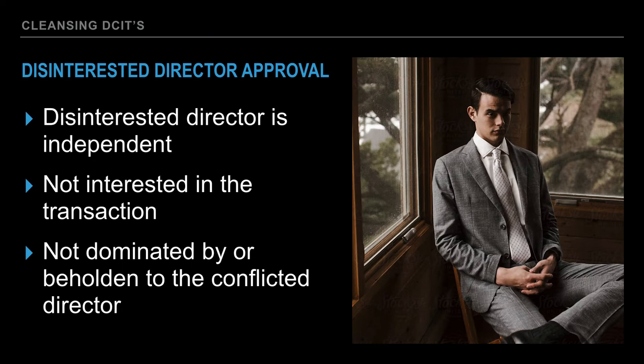There are two major concepts: disinterested and independent. Sometimes courts — and even textbooks — conflate these concepts. I'm going to break this apart into two separate concepts. First, we are going to talk about being interested or disinterested and whether a director has a disabling interest. Then we are going to talk about whether that director is independent or, on the other hand, controlled. So those are really two separate points: one, whether the director is disinterested or has a disabling interest; and two, whether the director is independent or controlled.